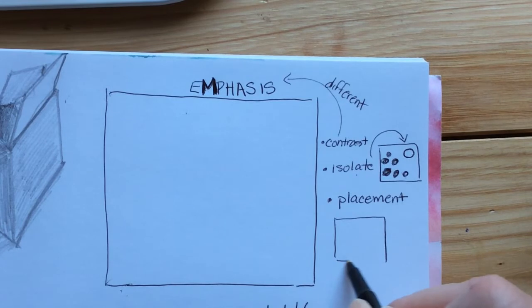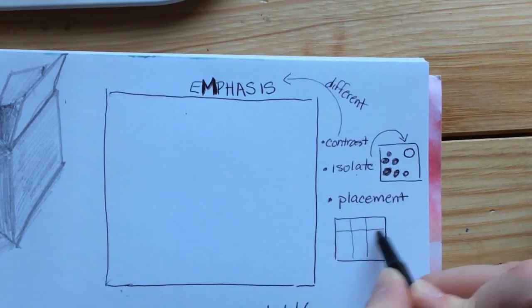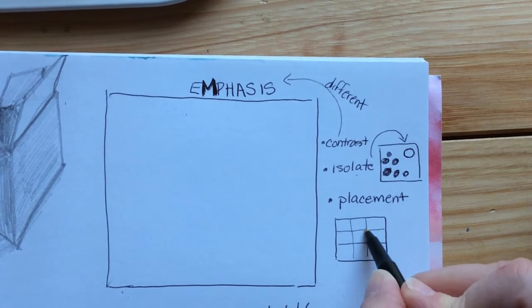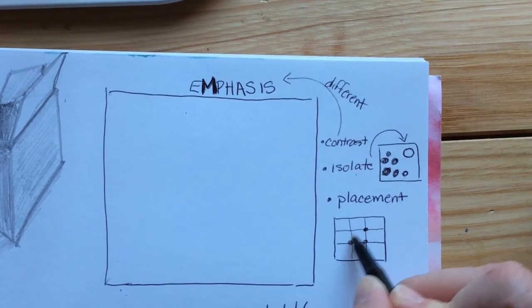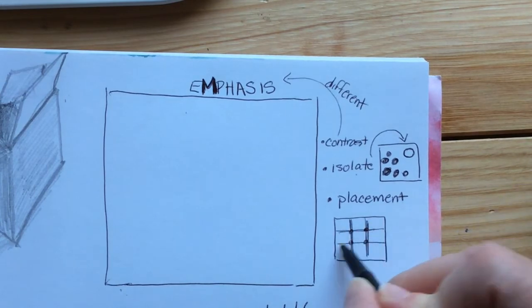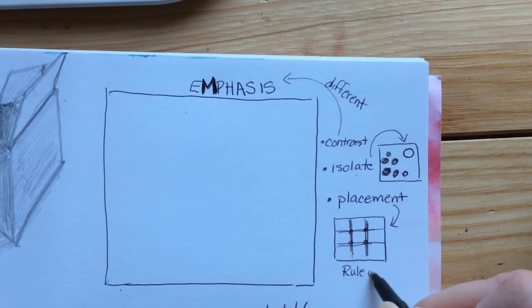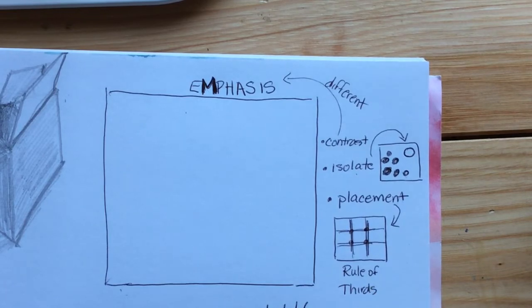Now, placement is a big key to emphasis. When you take a picture on your phone, sometimes you see this grid, and this is called the rule of thirds. If you put something at the intersection of that grid, or on the lines of the grid, that's a good placement. It's going to emphasize whatever's on that intersection or line in that rule of thirds.